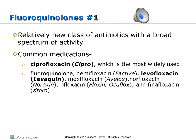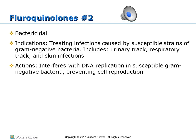Fluoroquinolones are a relatively new class of antibiotics with a broad spectrum of activity. Common medications include ciprofloxacin, levofloxacin, and ofloxacin. Levofloxacin carries a great chance of tendon rupture. Fluoroquinolones are known to treat infections from gram-negative bacteria, including urinary tract infections, respiratory infections, and skin infections — frequently given for UTIs.